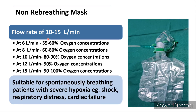The flow rate for the NRM is between 10 to 15 liters per minute. At 6 liters per minute, 55 to 60 percent oxygen concentration is delivered; at 8 liters, 60 to 80 percent; at 10 liters, 80 to 90 percent oxygen. At least 10 liters per minute should be set so that 90 percent oxygen concentration is delivered. At 12 liters, 90 percent, and at 15 liters per minute, 90 to 100 percent oxygen concentration is delivered.